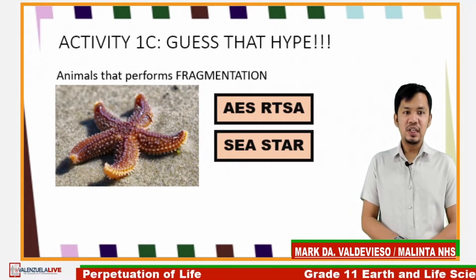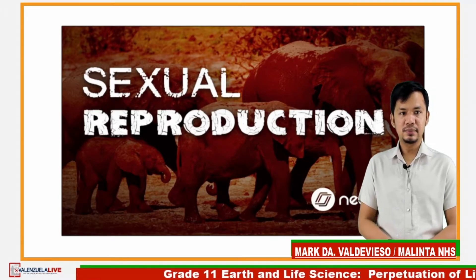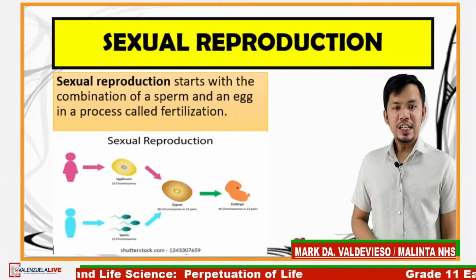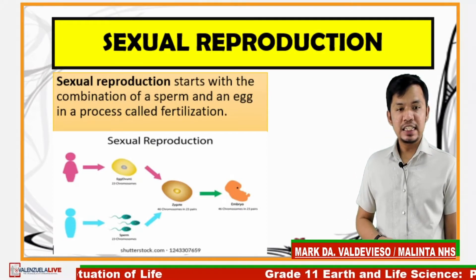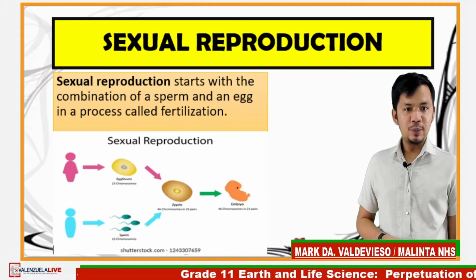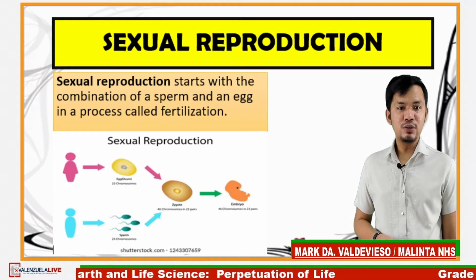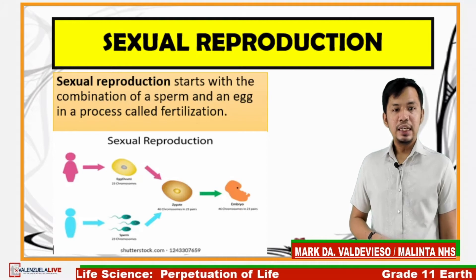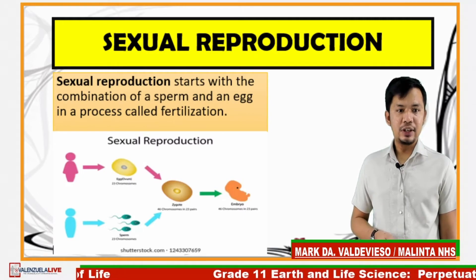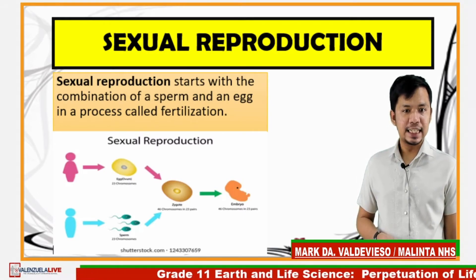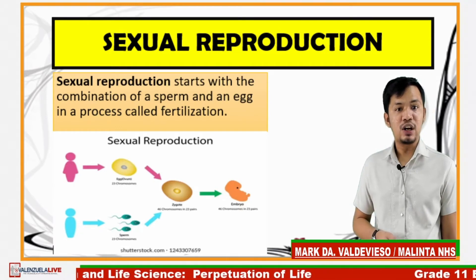Now we are done with asexual reproduction. Let's focus on sexual reproduction. Sexual reproduction starts with the combination of a sperm and egg in the process called fertilization. Fertilization is the union of the sperm nucleus of paternal origin with an egg nucleus of maternal origin to form the primary nucleus of an embryo. The essence of fertilization is the fusion of the hereditary materials of two different sex cells or gametes, each carrying half the number of chromosomes typical of the species.